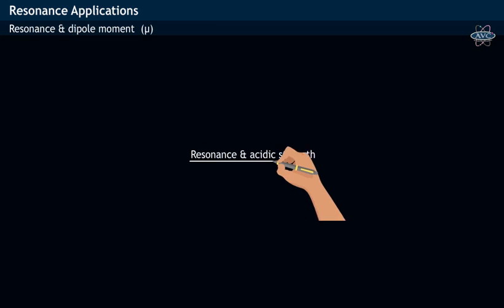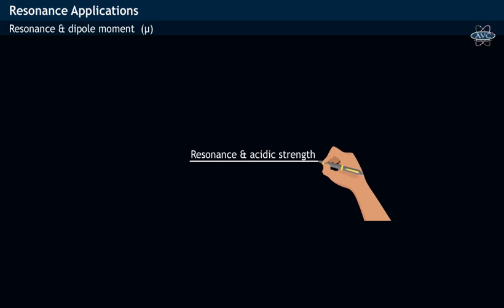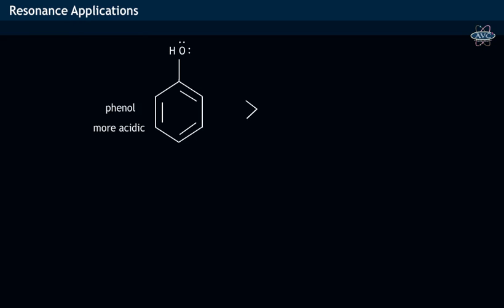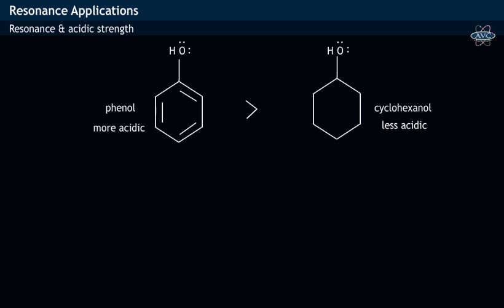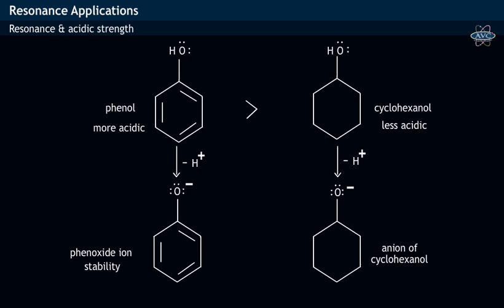Acidic strength and resonance. Phenol is more acidic when compared to cyclohexanol. This is explained on the basis of the stability of phenoxide ion and anion of cyclohexanol formed during respective acid ionizations.